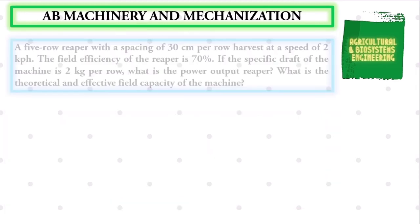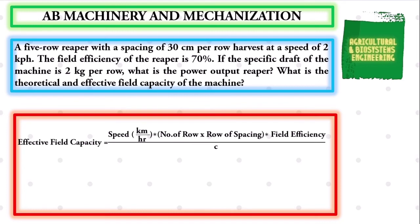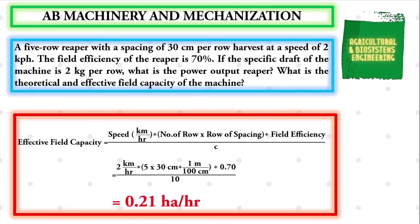The next value to solve is the effective field capacity. The formula is speed in km/h times the number of rows times the row spacing, multiplied by the field efficiency, all over the constant value of 10. Substituting values: effective field capacity equals 2 km/h times 5 rows times 30 cm, converted to meters using 1 meter equals 100 centimeters, multiplied by the field efficiency of 0.70, all over 10. The final value for effective field capacity is 0.21 hectare per hour.